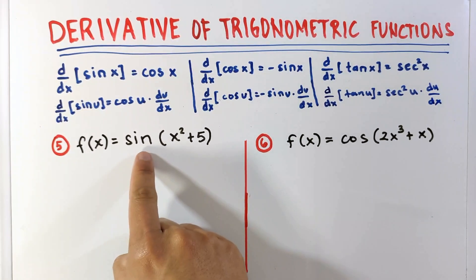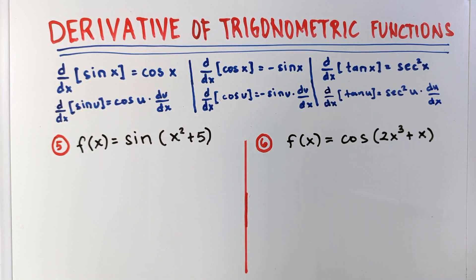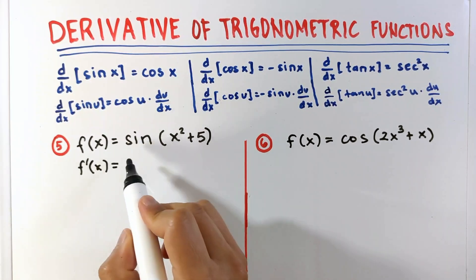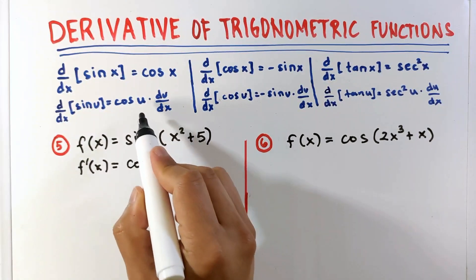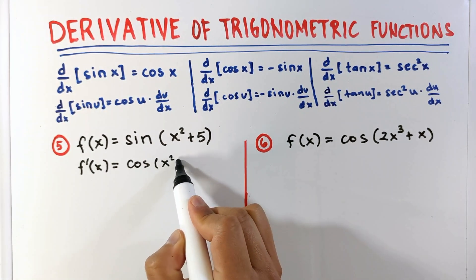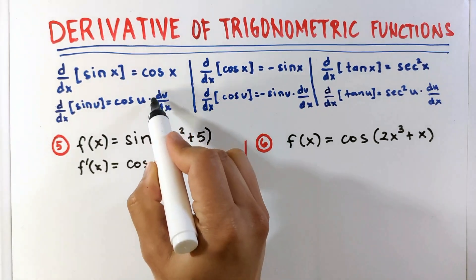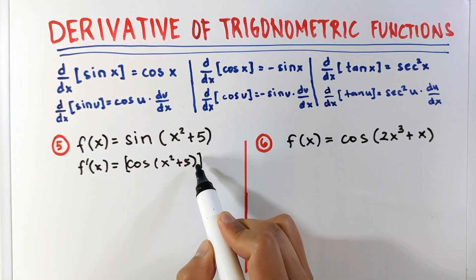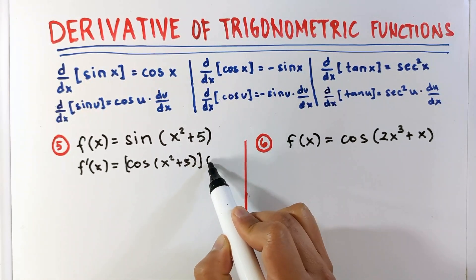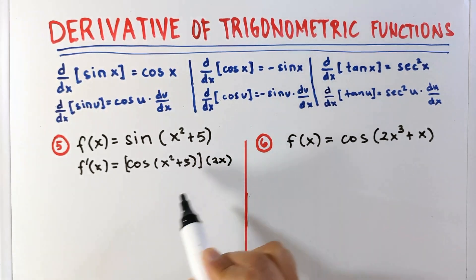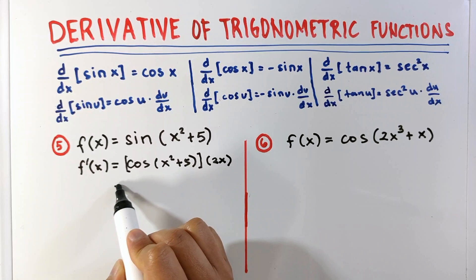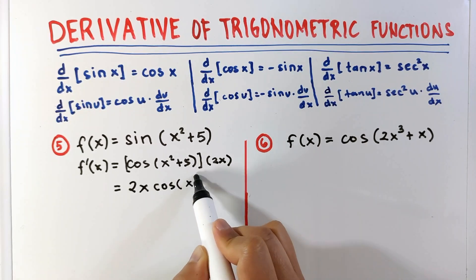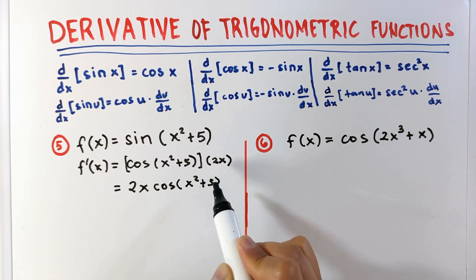Example: given f of x equals sine of x squared plus 5, then its derivative f prime of x is — the derivative of sine is cosine — copy the argument x squared plus 5 — and then multiply it by the derivative of the inner function, which is the derivative of x squared plus 5. That is 2x plus 0, so 2x. Let's write this as 2x cosine of x squared plus 5. That's the final answer.